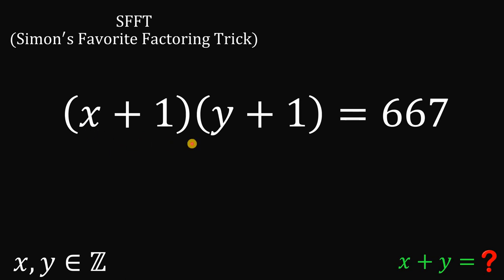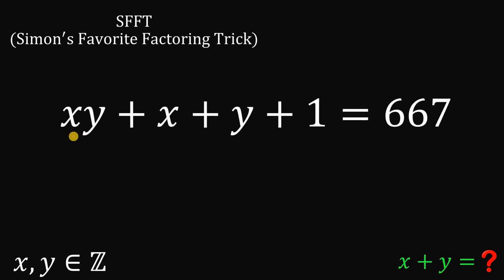Now, if we multiply this, we have x times y, this is xy. x times 1, this is x. 1 times y, this will give us y. And 1 times 1, this will give us 1.